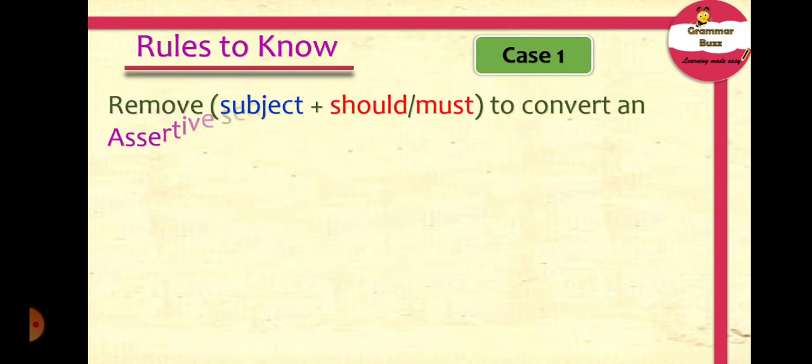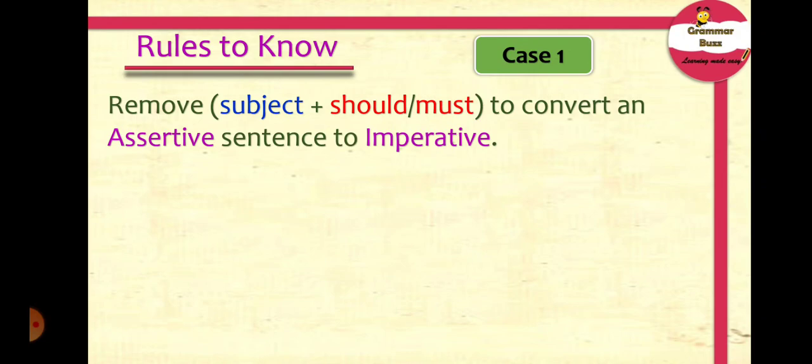In order to understand the conversion of assertive to imperative sentences, we need to understand a few cases. Let us look into these cases one by one. Case 1: remove the subject plus 'should' or 'must' to convert an assertive sentence to imperative. Let us understand this with the help of an example.